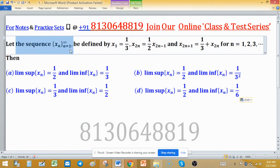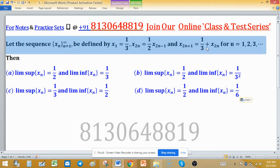Let the sequence xn be defined by x1 is 1 by 3, x2n is half x2n minus 1, and x2n plus 1 is 1 upon 3 plus x2n for all natural number. This is the structure of xn. How this is defined for all natural numbers? This is for even terms, and this is for odd terms.